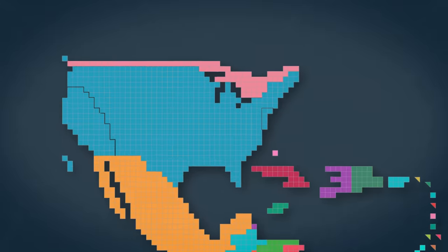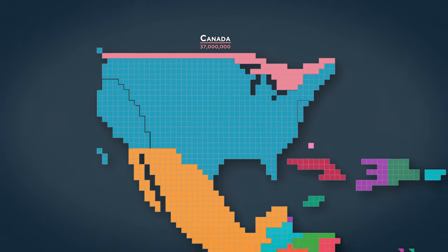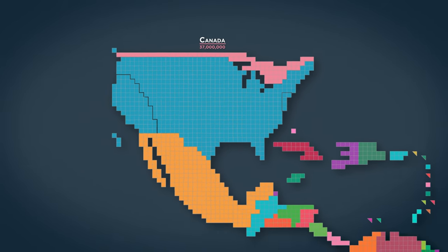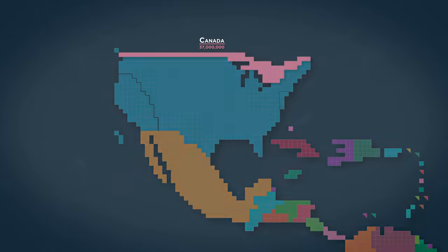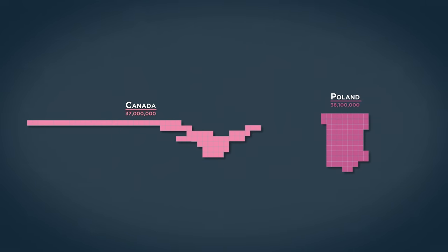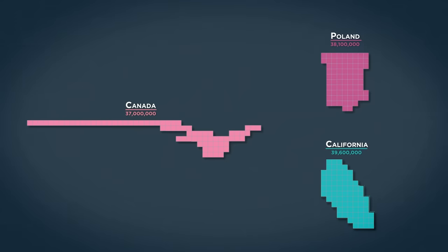Let's start by taking a look at North America, and specifically the tiny strip that is now Canada. Canada's 74 squares are indicative of her population of only 37 million people, which is vastly smaller than either the United States or Mexico. But going even further, Canada has a smaller population than Poland, and even has a smaller population than just the U.S. state of California alone.